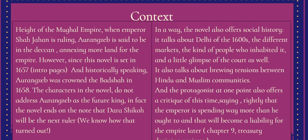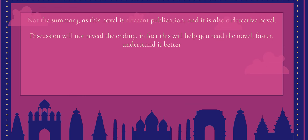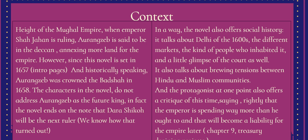In this video I would not give you the entire summary — that is for you to read on your own — but I would help you read this novel faster and understand it better. The context of the novel is that it is set at the height of the Mughal Empire when Emperor Shah Jahan is ruling and Aurangzeb is said to be in the Deccan, annexing more land for the Empire.